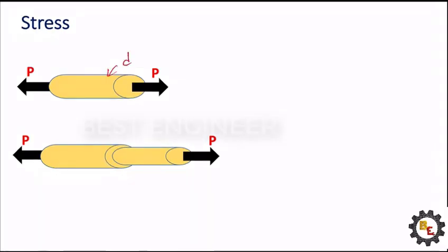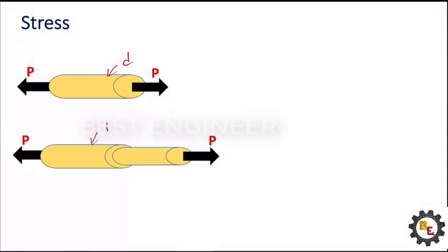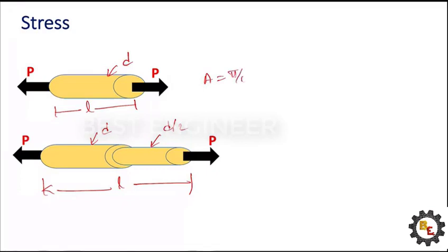There are two circular rods: one of diameter D, and another with diameters D and D/2, both of the same length. The same load is applied. The area is pi/4 times D squared, but here two diameters are present — D and D/2 — so the area varies. Because of this changing area, the stress concentration factor will play a role here.